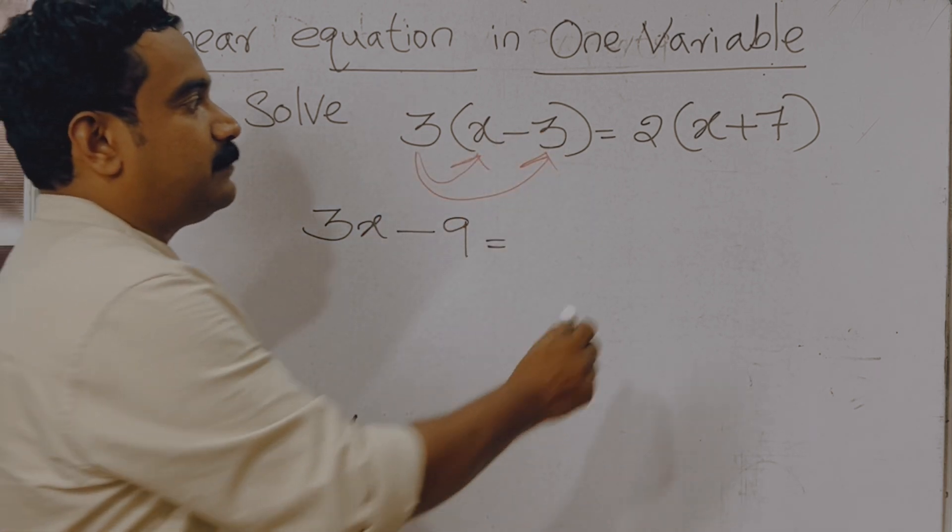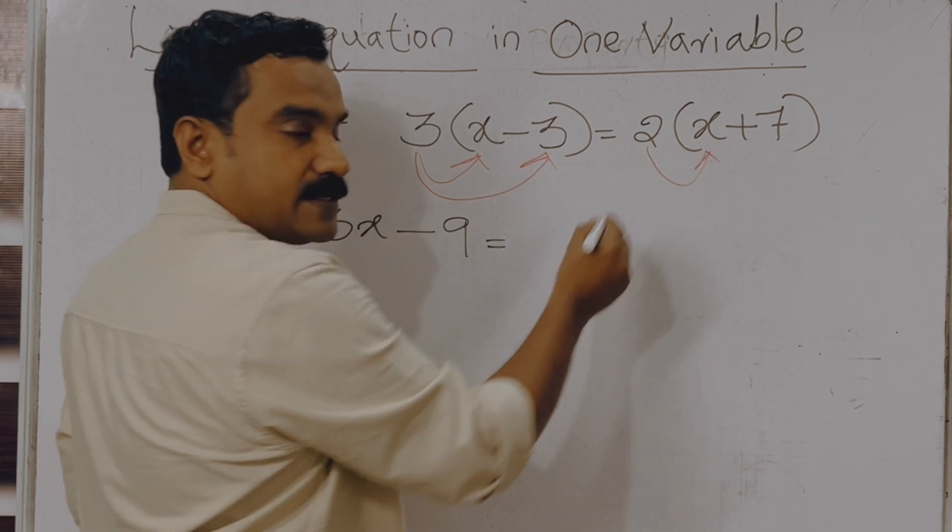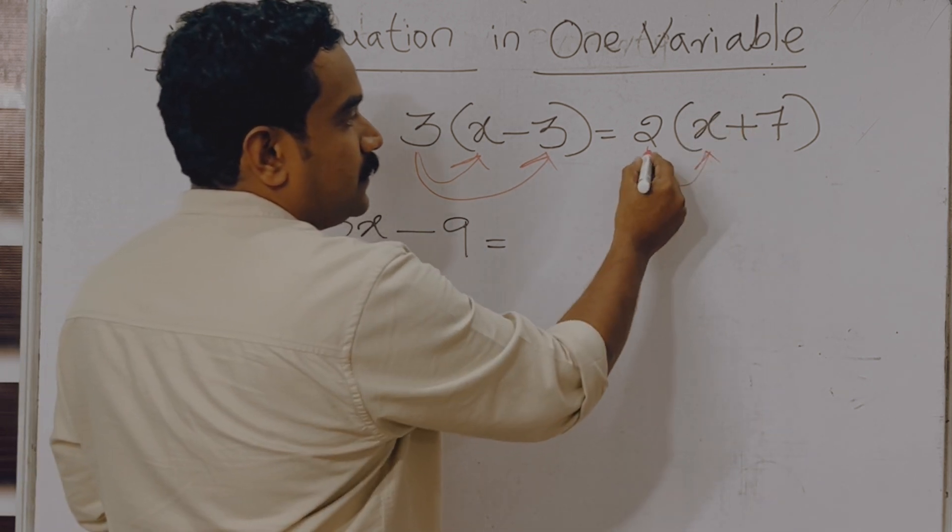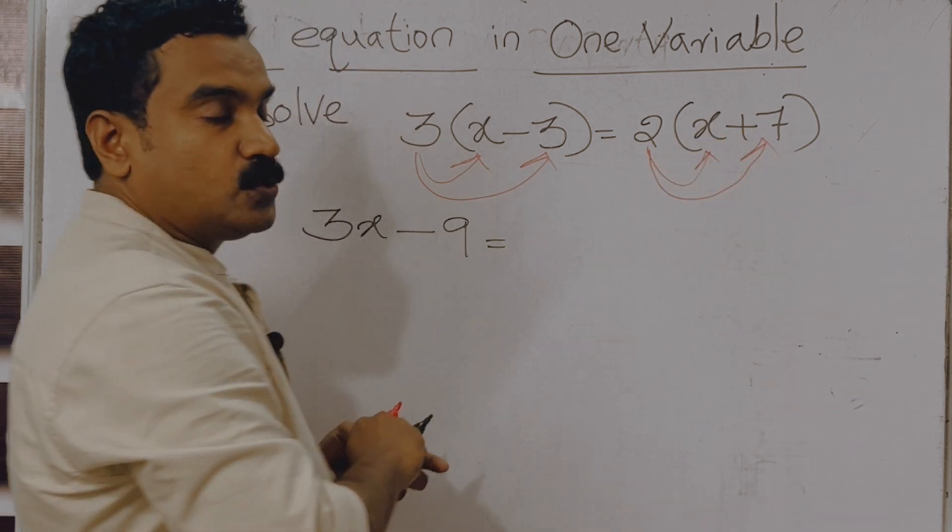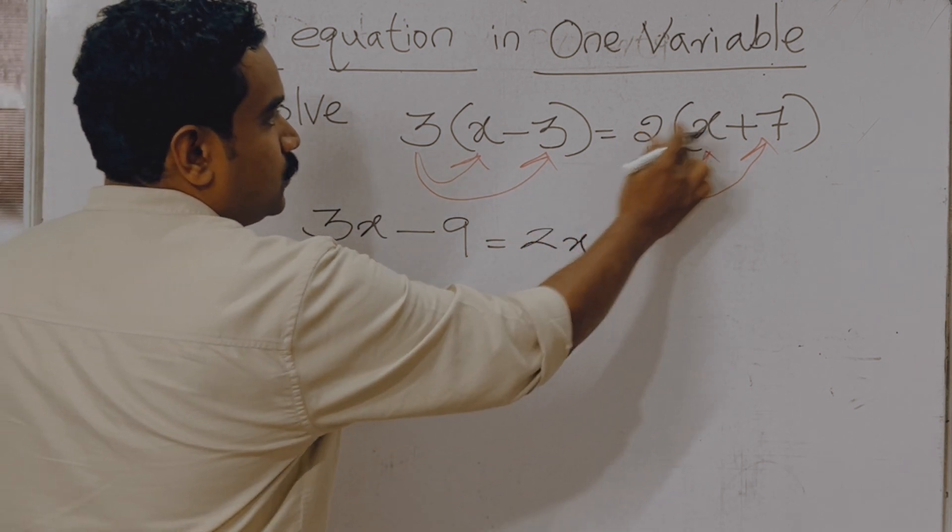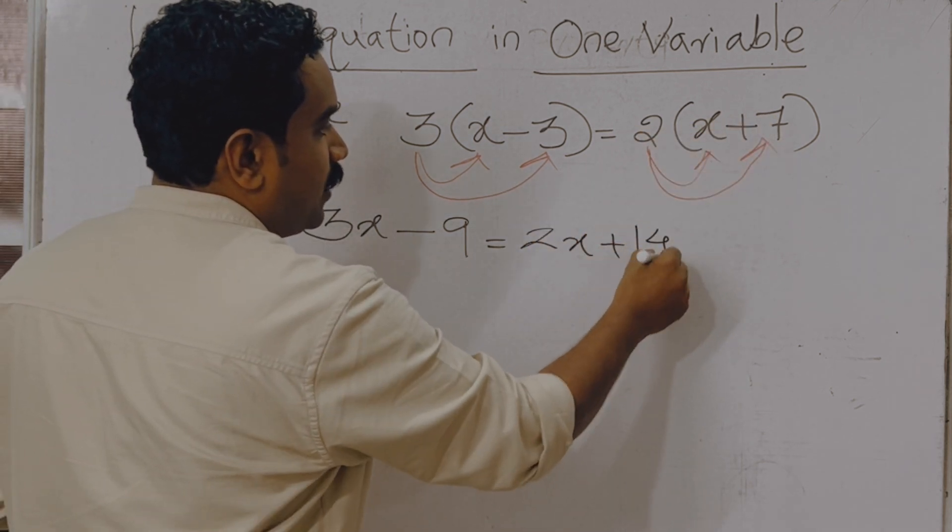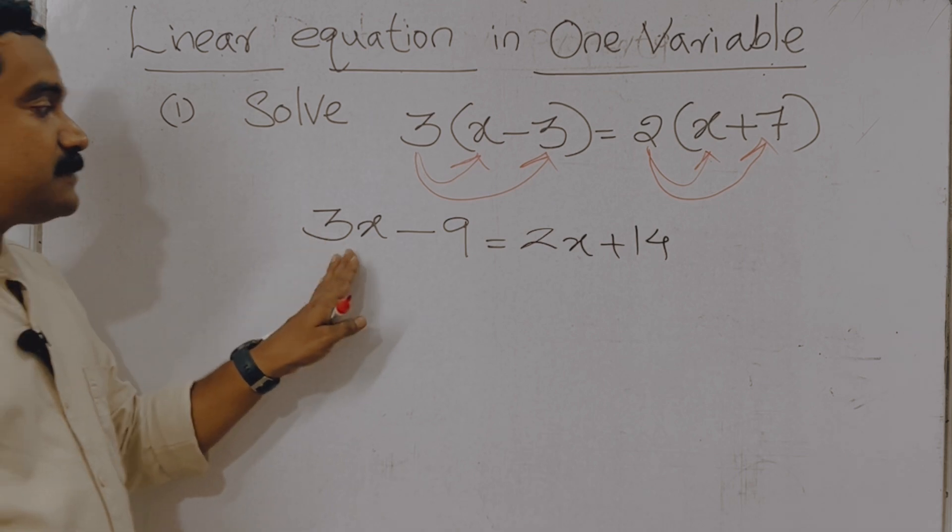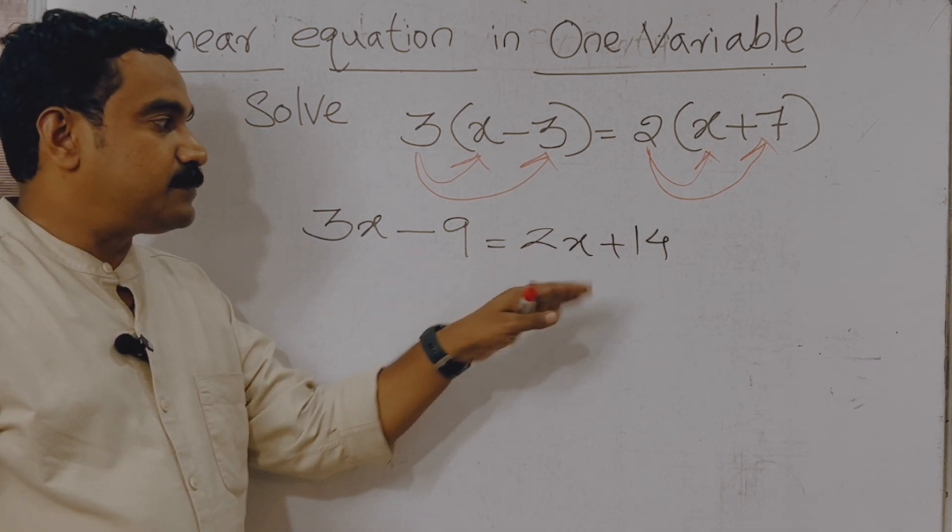In right side, you need to multiply first 2 with x, then plus, then 2 with 7. 2 with x, 2 into x is equal to 2x, 2 into 7 equal to 14. Now the equation is 3x minus 9 is equal to 2x plus 14.